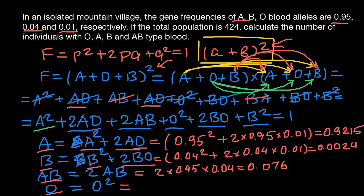And the frequency of blood group O is 0.01 × 0.01 = 0.0001. This is the frequency of blood group O.